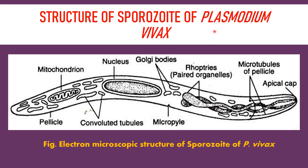When an infected female Anopheles mosquito bites a person, the infective stage of Plasmodium — that is, the sporozoite — enters into the human blood.